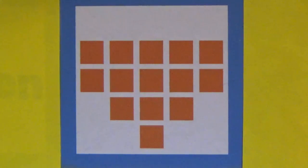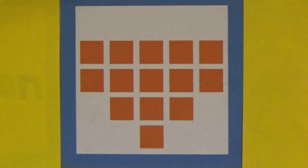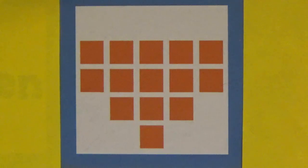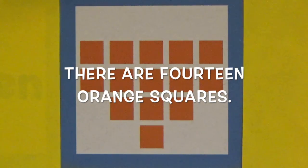How many orange squares do you see? Let's count them. 1, 2, 3, 4, 5, 6, 7, 8, 9, 10, 11, 12, 13, 14. There are 14 orange squares.